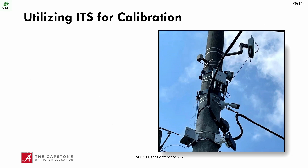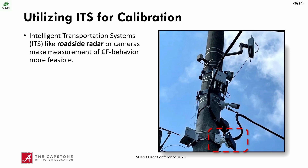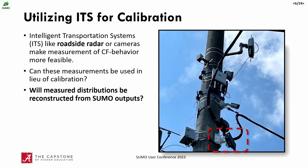We think the answer lies in intelligent transportation systems. In our network, we have a traffic signal with various ITS components — importantly, a radar unit highlighted in red. These radars and cameras allow measurement of high-resolution trajectories, which can be processed to obtain car-following model parameters. Our hypothesis is that if we measure the acceleration of vehicles in the network and give that to SUMO as the acceleration parameter, then the measured distribution should be recreated. Ultimately, it's a question about whether car-following model parameters are physically observed in the network.